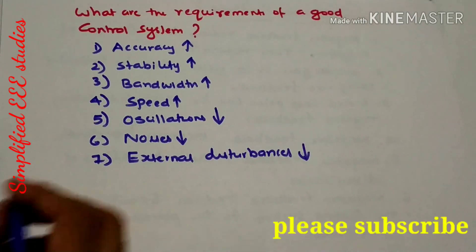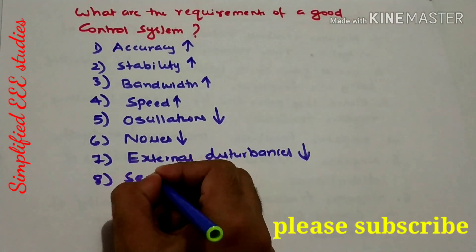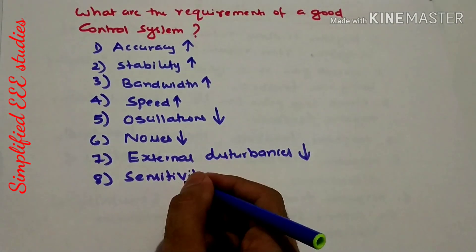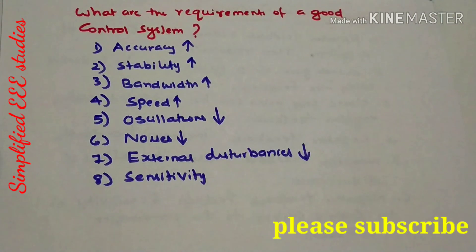Then sensitivity. A good control system should be very insensitive to parameter variation.